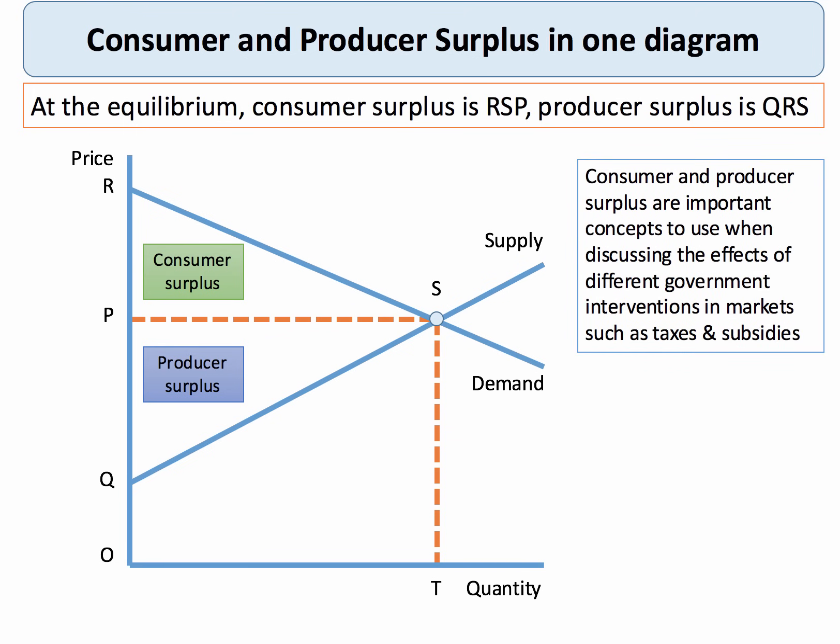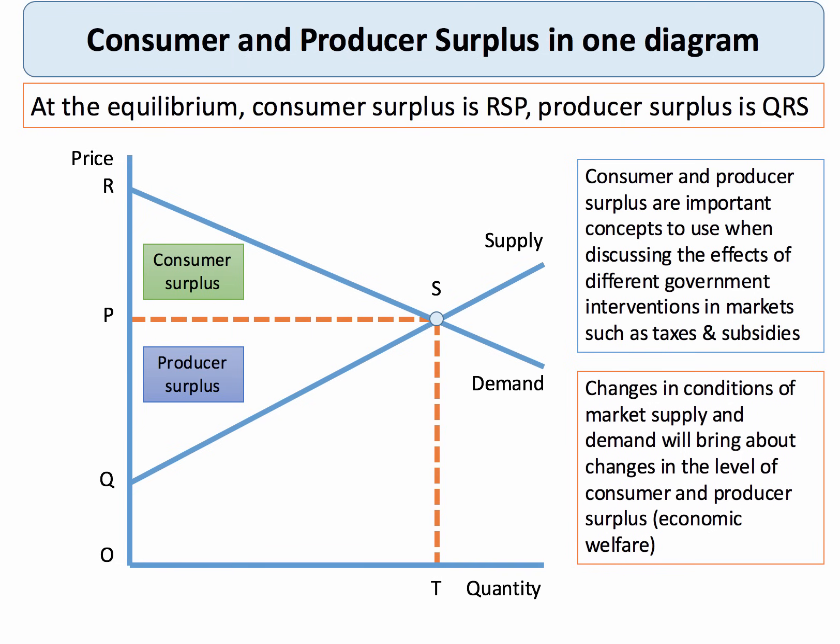These two concepts are really worth getting to know. They're very important ideas to use when discussing the effect of interventions in markets — we have topic videos looking at indirect taxes and subsidies, maximum and minimum prices. So if you get a chance in the exam, please do use consumer and producer surplus. Changes in the conditions of supply and demand will affect the overall level of consumer and producer surplus, and these are two measures of economic welfare.